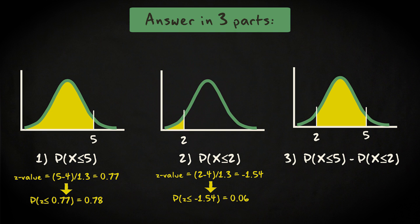So, the probability for the range from 2 till 5 is the difference, which is 0.72. And that's the answer to the question. Okay, let's take a breath.